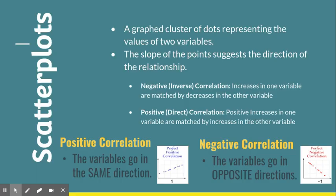Some negative correlations: the more distractions you have while taking a test, the lower your score — as distractions increase, test score decreases. A student who has many absences: an increase in absences correlates with a decrease in grades. And as the weather gets colder, air conditioning costs decrease. Those are variables going in opposite directions.